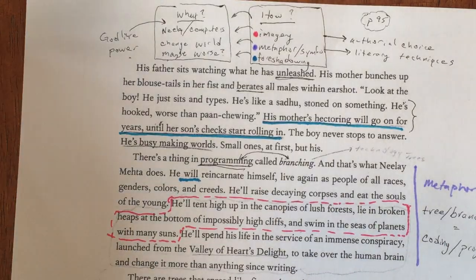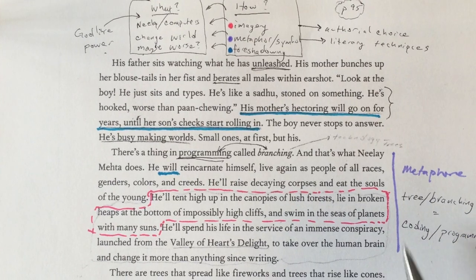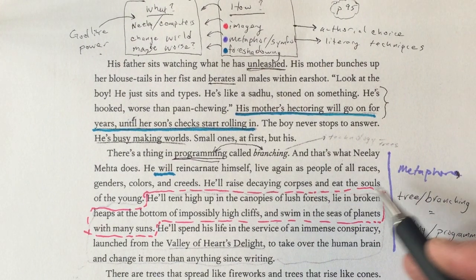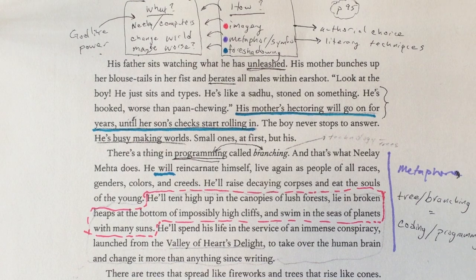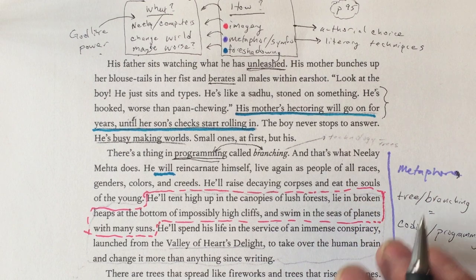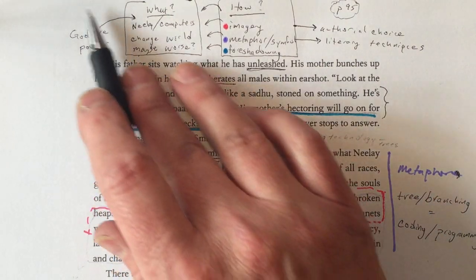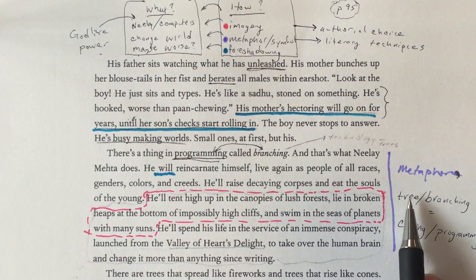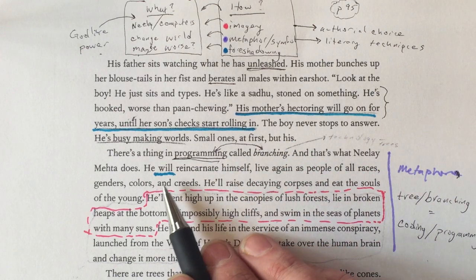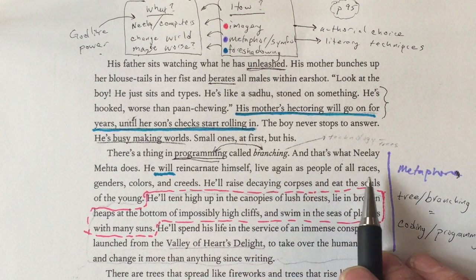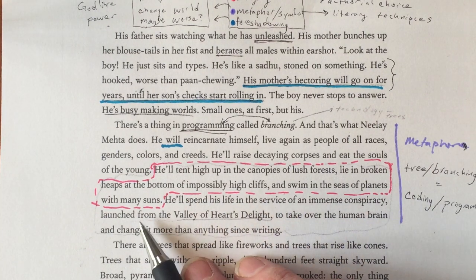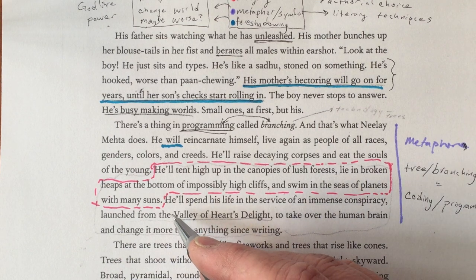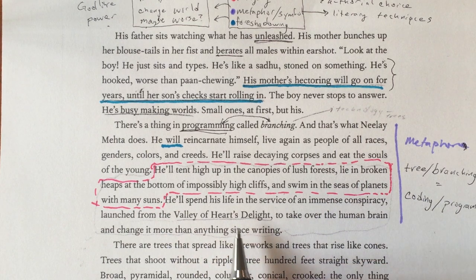Now we're breaking it into pieces that work together. Imagery uses language to put the reader inside the experience so you can almost physically feel what's being presented. What does it do here? It conveys god-like power. The metaphor specifically connects branching and programming, and then symbolically — 'he will reincarnate himself, live again as people of all races' — that's through his games, his computer games. 'He'll spend his life in the service of an immense conspiracy launched from the Valley of Heart's Delight' — that's Silicon Valley — 'to take over the human brain and change it more than anything since writing.'